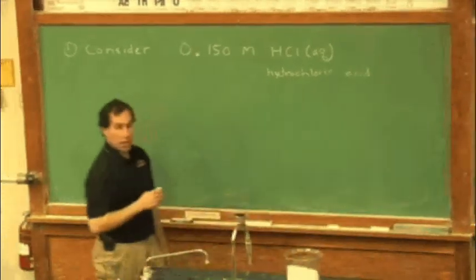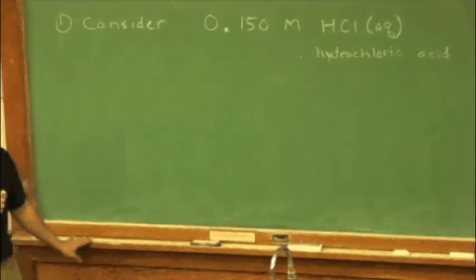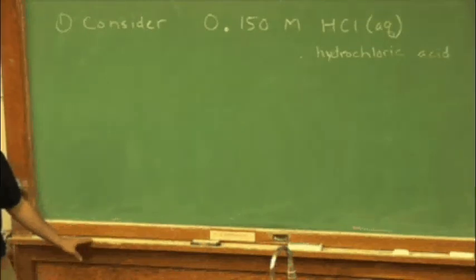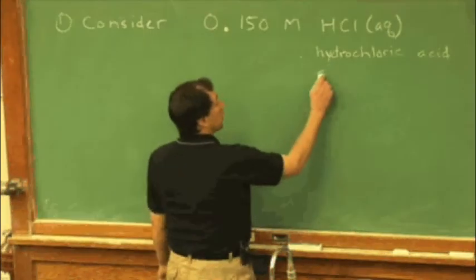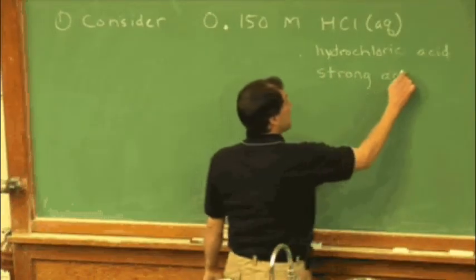It's available in several consumer products. There's some toilet bowl cleaners and some masonry or brick and cement cleaners that contain some hydrochloric acid. Most importantly for us, hydrochloric acid is what's known as a strong acid.